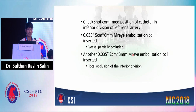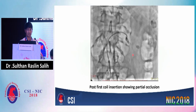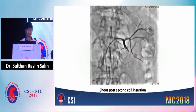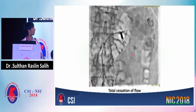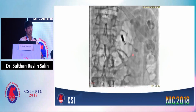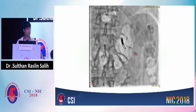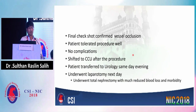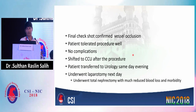We used initially a 5 cm to 6 mm M-ray embolization coil that partially occluded the vessel, and another 2 cm to 3 mm M-ray embolization coil that resulted in total occlusion of the inferior division. The shot post first coil and post second coil are shown. The shot taken a few minutes later showed total occlusion, and we can see the contrast staining of the vessel. Final check shot confirmed vessel occlusion. The patient tolerated the procedure well and was shifted to CCU with no complications, then shifted to the urology department in the evening and underwent laparotomy the next day.